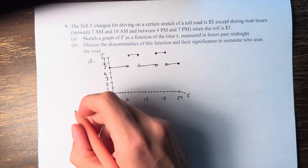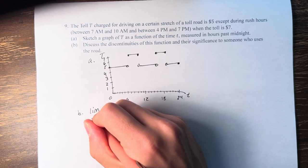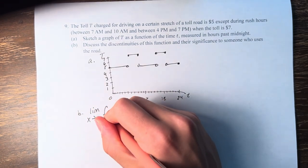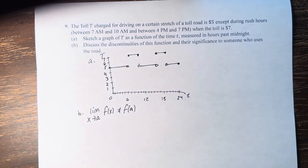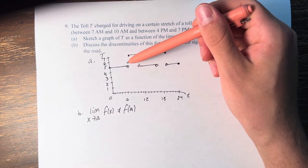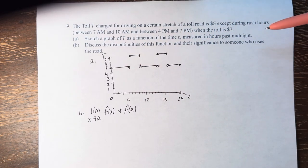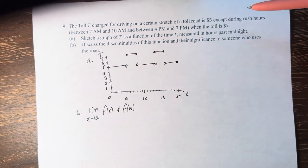We are asked to discuss the discontinuities of this function and their significance to someone who uses the road. The discontinuity is where the limit as x approaches some value a of a function is not equal to the value of the function at that point. And we can notice we have 4 points where the limit as x approaches a does not exist.